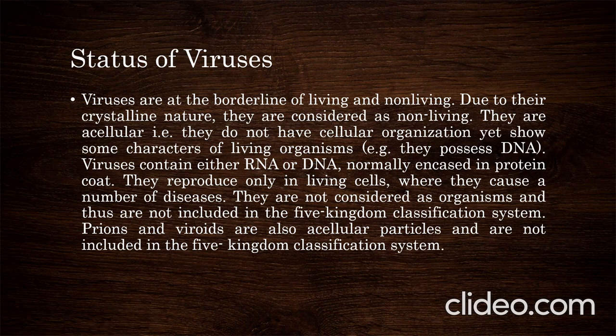Prions and viroids are also acellular particles not included in the five-kingdom classification system. Prions are composed of protein only and act as infectious particles in certain organisms. Viroids are acellular, composed of circular RNA only, act as infectious particles, and cause disease in certain plants. They are not included in the five-kingdom classification either.